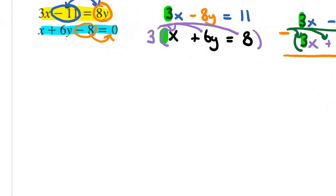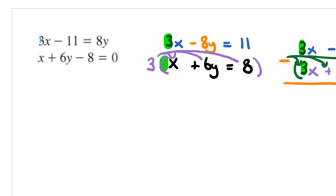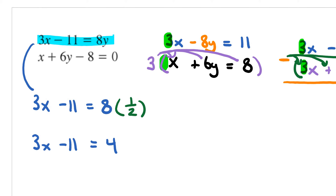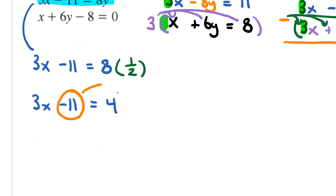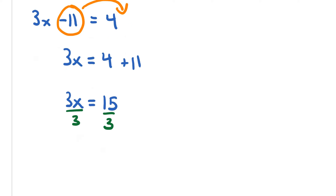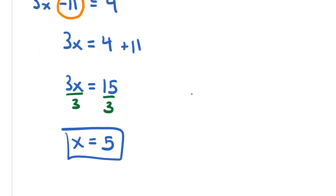The negative 26 cancels off, giving you y, and that's going to give you positive 1 half. So y equals 1 half. After you get the 1 half, go back to the first equation. If I rewrite that, I get 3x minus 11 equals 8 times y, and y has a value of 1 half. So now I have 3x minus 11 equals 4, since 8 times 1 half is 4. Then I bring the negative 11 to the other side: 3x equals 4 plus 11, which is 15. Divide both sides by 3, and x equals 5. So the final answer is 5 comma 1 half.